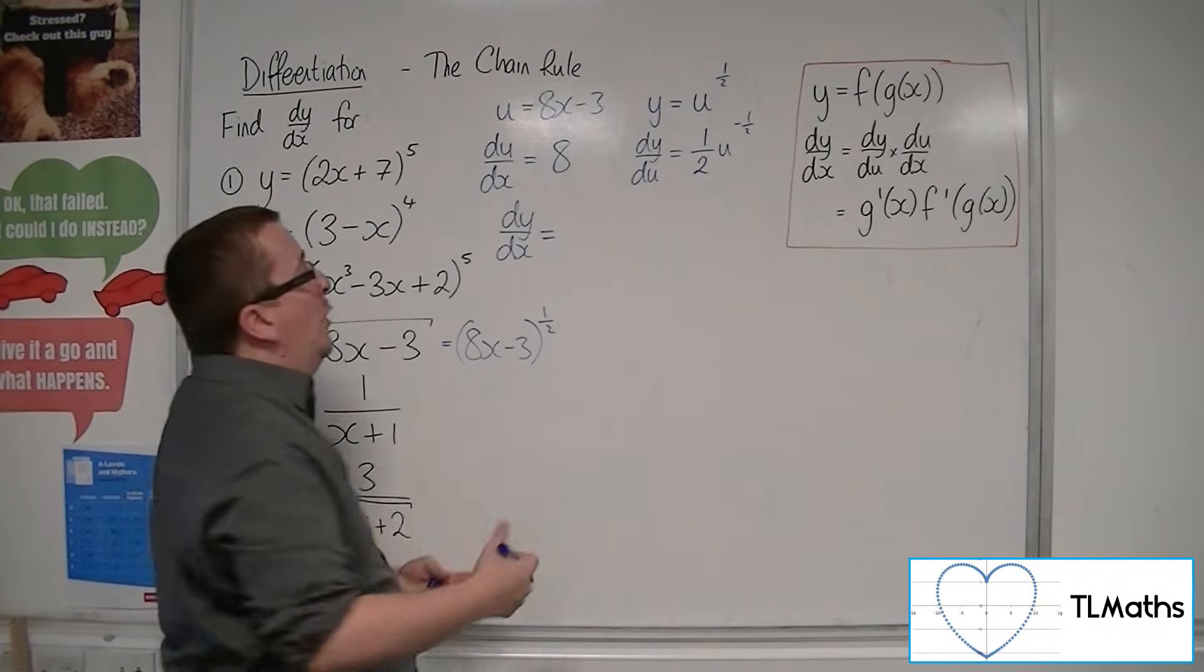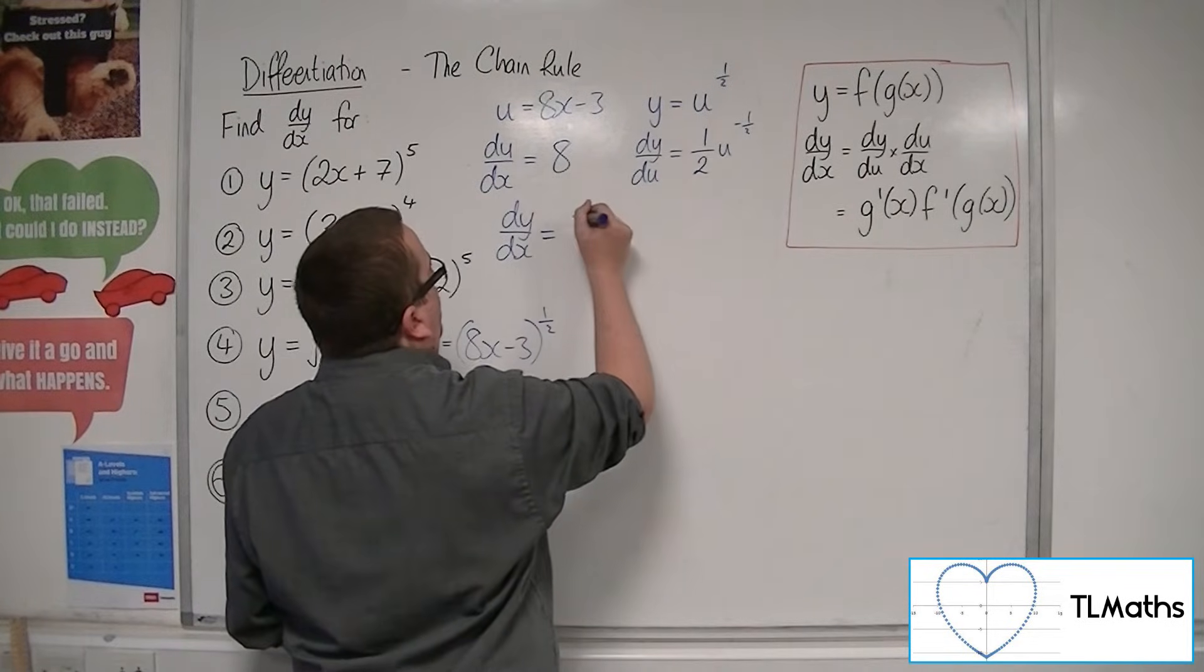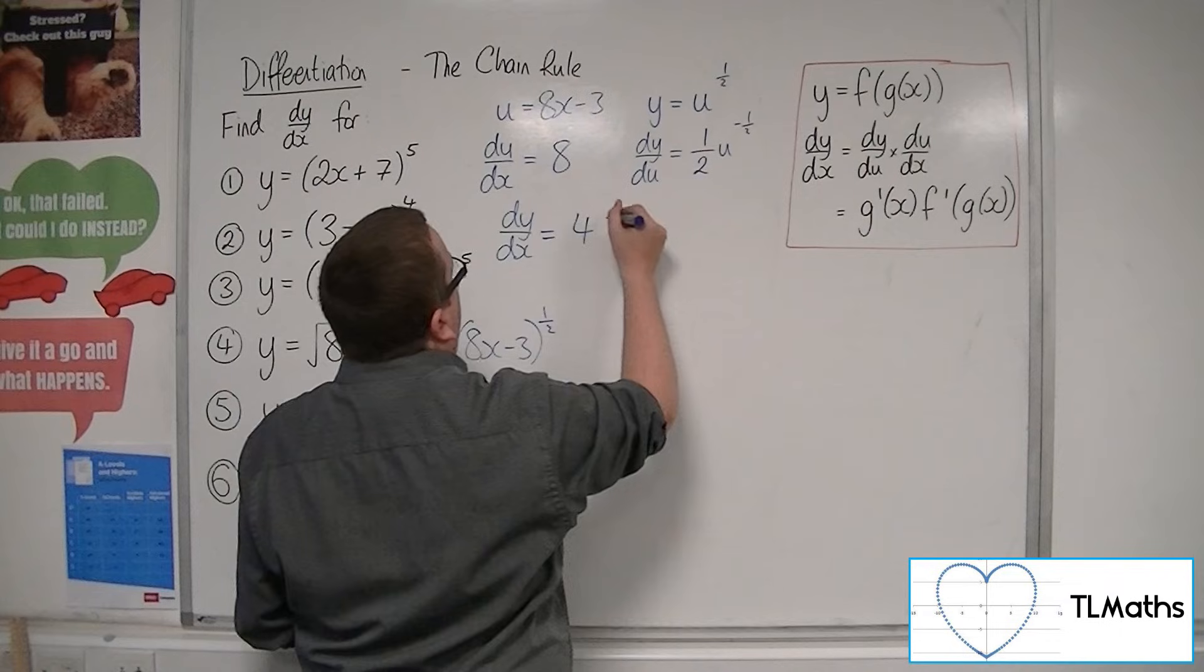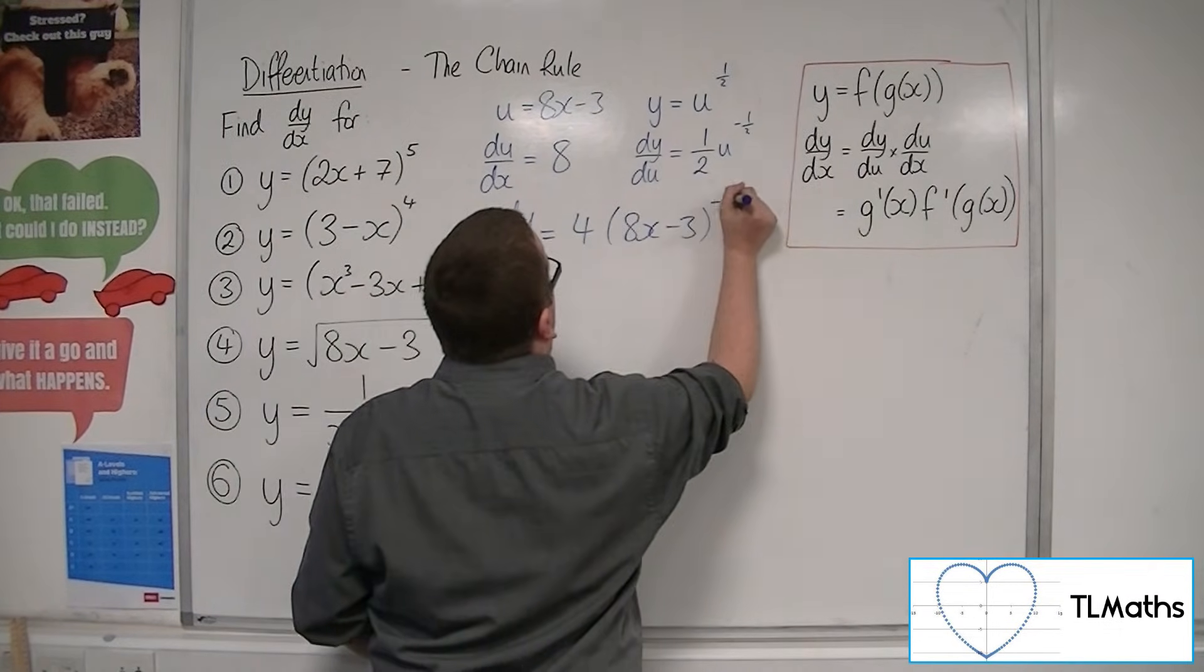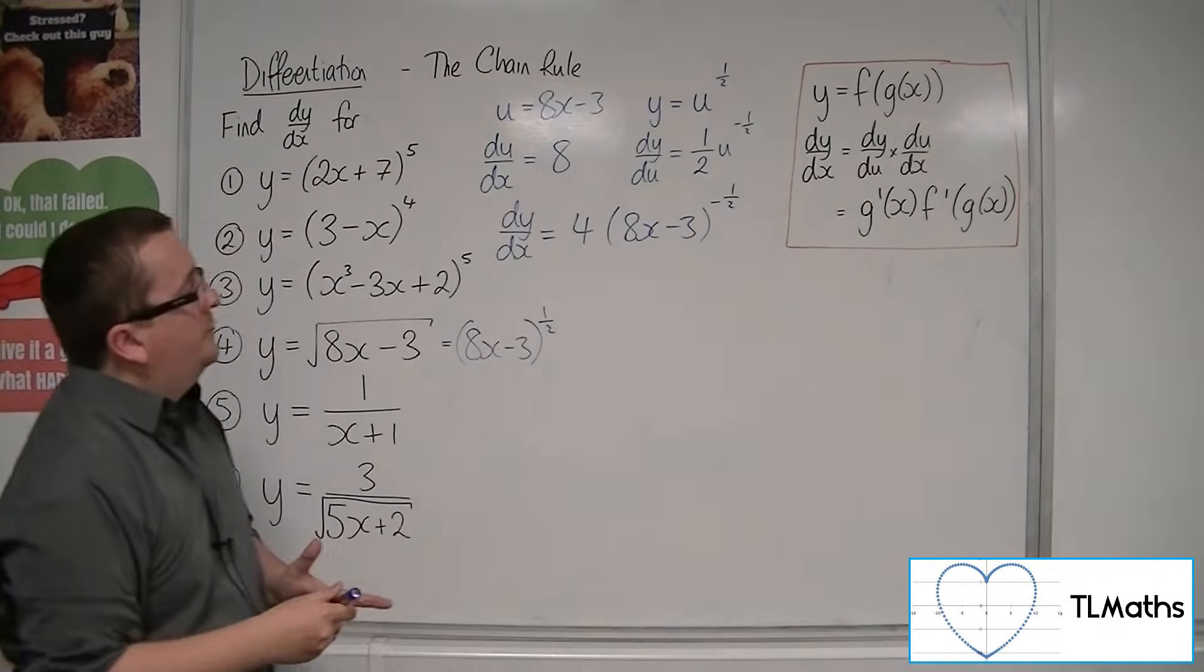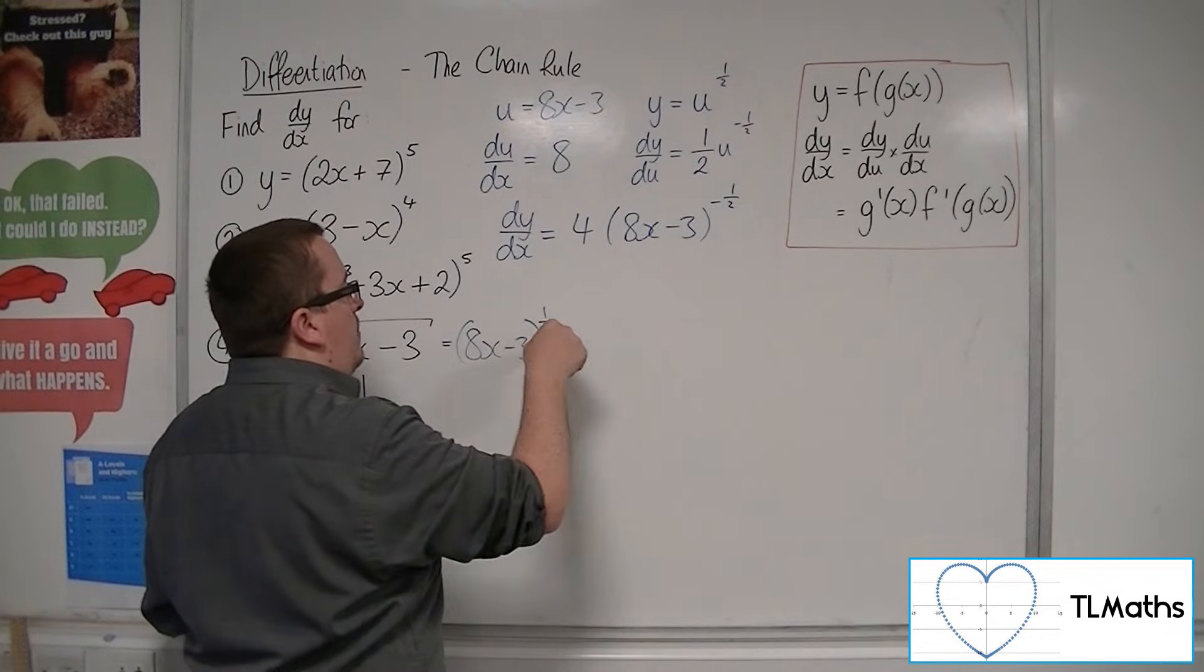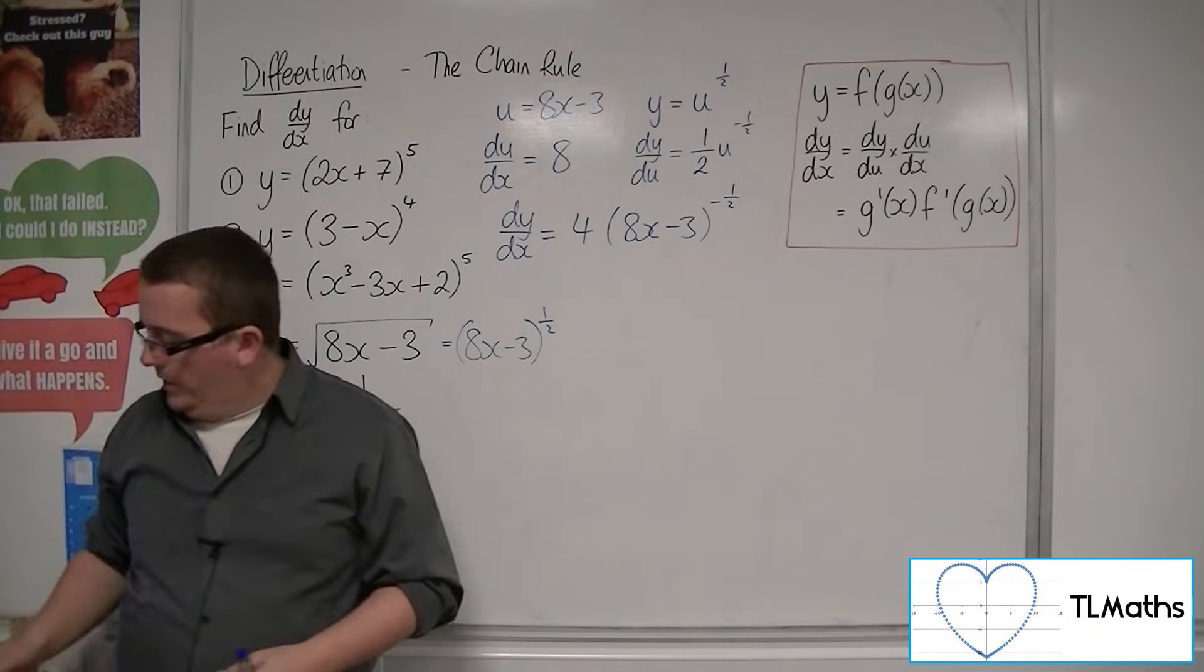So when I multiply these two together, 8 times 1 half is 4. So 4u to the minus 1 half. Now u is the 8x minus 3. So that goes in a bracket. And that's the power of minus 1 half. So the derivative of what's inside came outside, the power came down to the front, and we took 1 off the power.